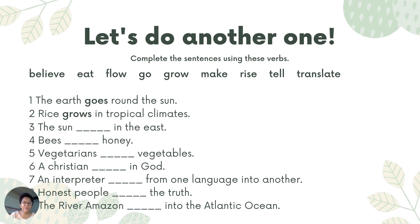Let's do another exercise with general truth sentences. The earth goes around the sun. Rice grows in tropical climates. The sun rises in the east. Bees make honey. Vegetarians eat vegetables. A Christian believes in God. An interpreter translates from one language into another. Honest people tell the truth. The River Amazon flows into the Atlantic Ocean.